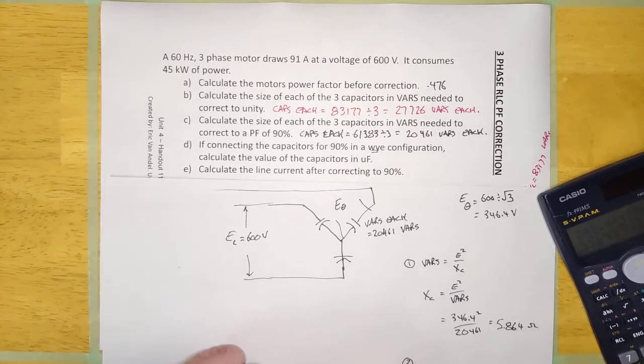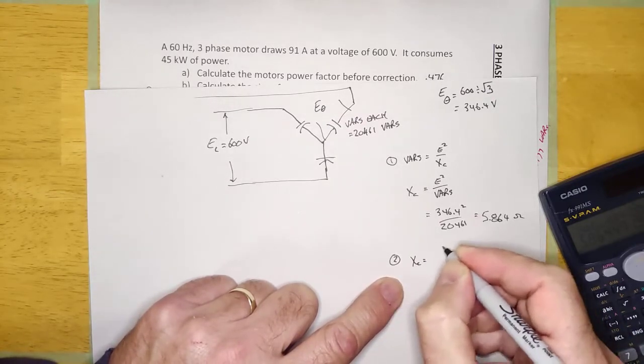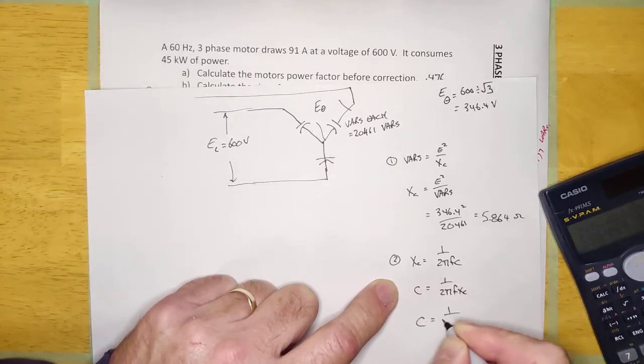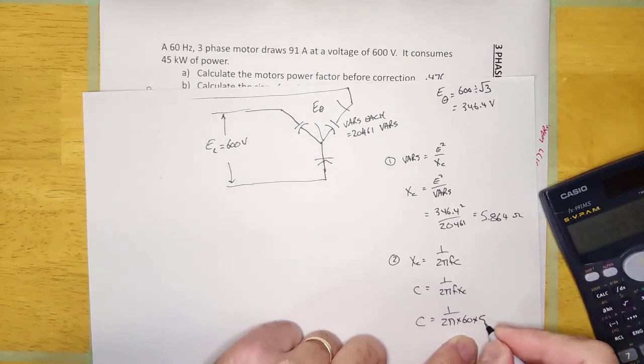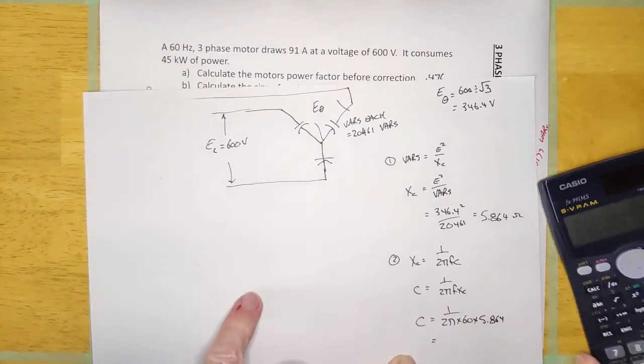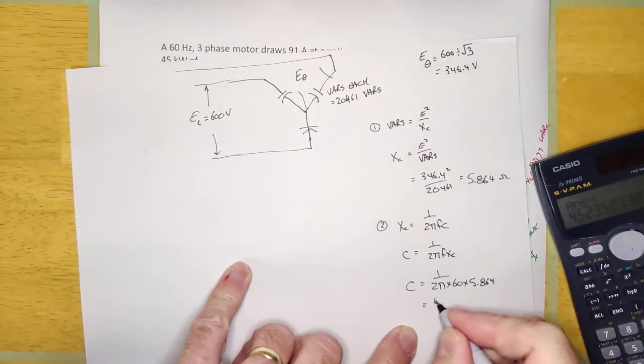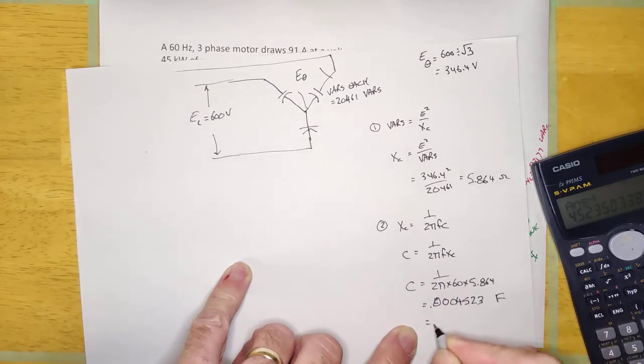And that's step one. And then step two, I don't want to go off the page here. So, C is going to be this formula right here. XC is equal to 1 over 2 pi FC. So, C is equal to 1 over 2 pi FXC. And so, C is equal to 1 over 2 times pi times 60 times 5.864. We'll go 2 times pi times 60 times 5.864 equals, and then hit 1 over X, then equals. And it's going to come to 0.0004523 farads, which is equal to 452.3 microfarads.